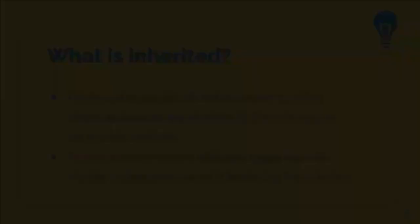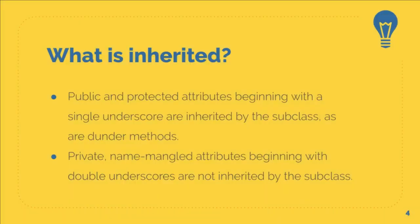Now a few notes on what is actually being inherited. All public and protected attributes — and as a reminder, protected attributes are those that begin with a single underscore — all of those will be inherited by the subclass, as will dunder methods. In contrast, private name-mangled attributes, those that begin with double underscores, will not be inherited by a subclass.